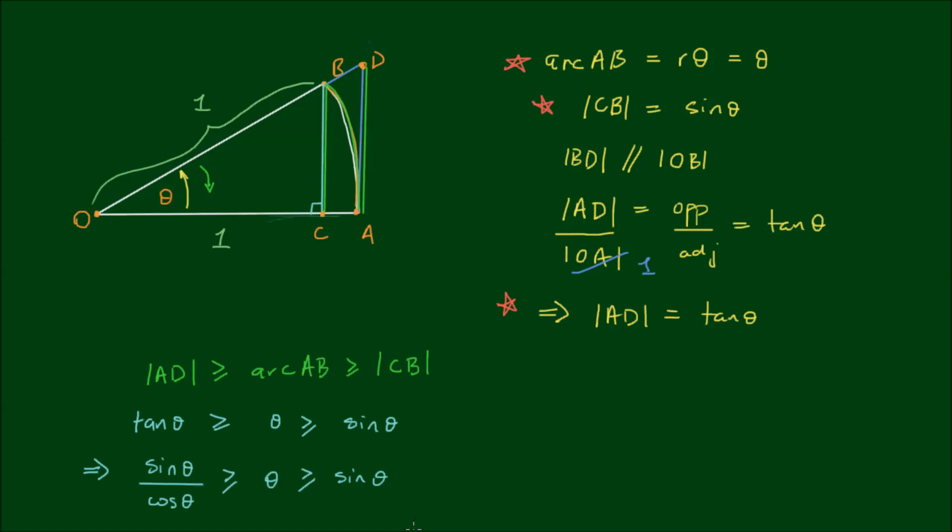And now it's just a matter of manipulation because we can divide everything by sin theta and this inequality still is maintained. So let's do that. So we have if we divide by sin theta we have 1 over cos theta which is greater than or equal to theta over sin theta which is greater than or equal to 1 because sin theta divided by sin theta is equal to 1. And this entire relationship is valid for all values of theta between negative pi on 2 to pi on 2 except for when theta equals 0.